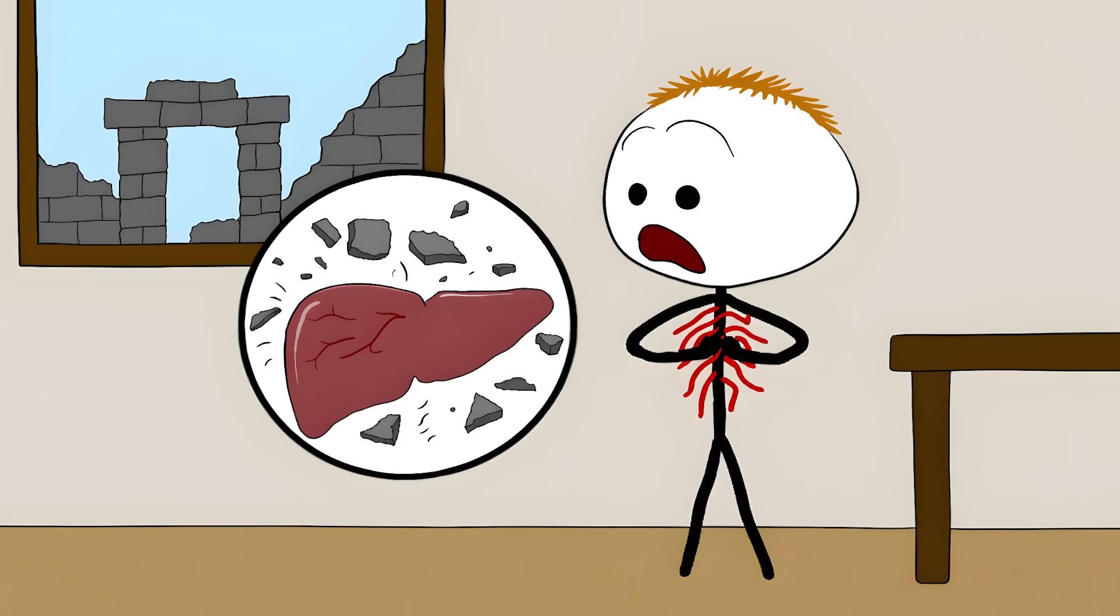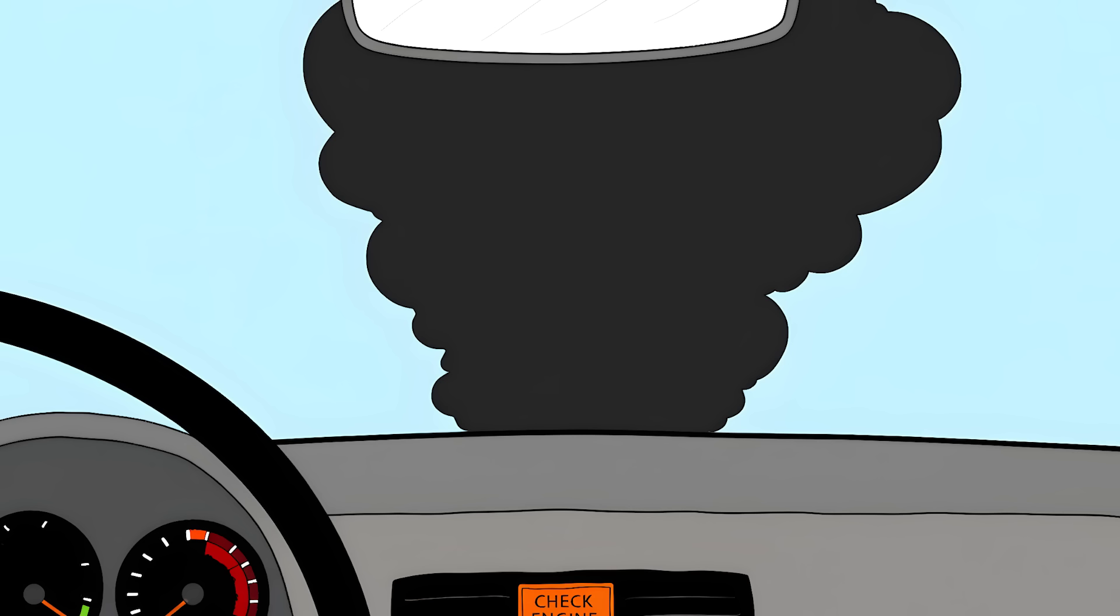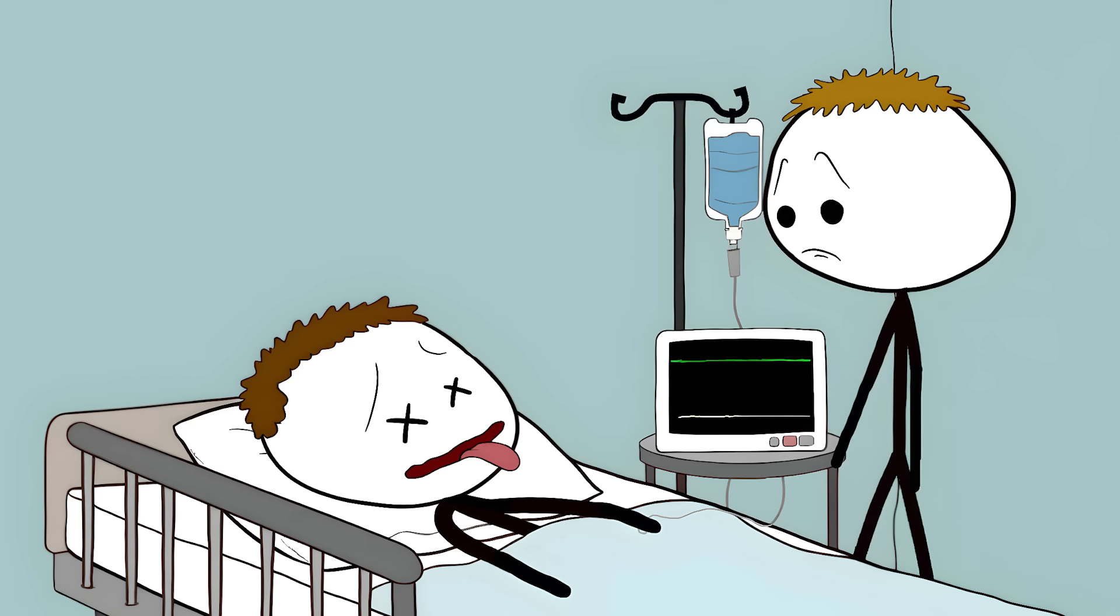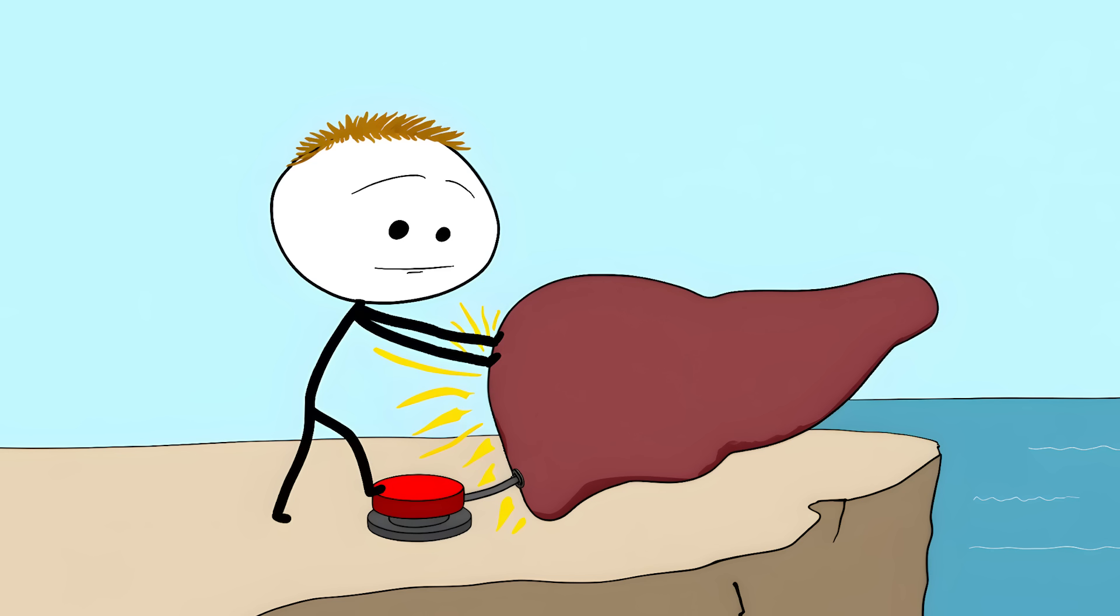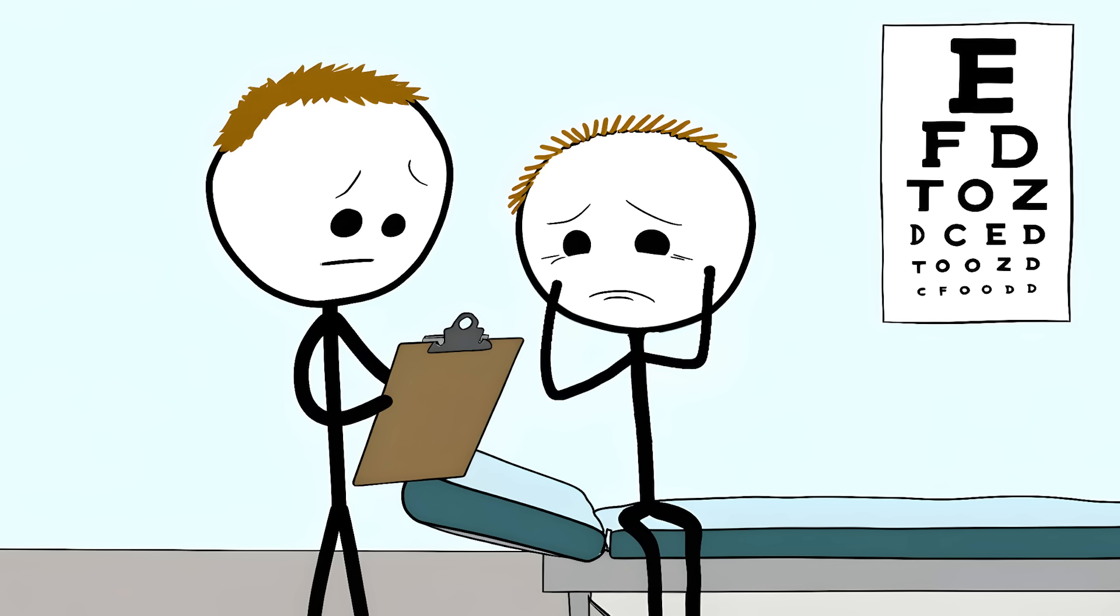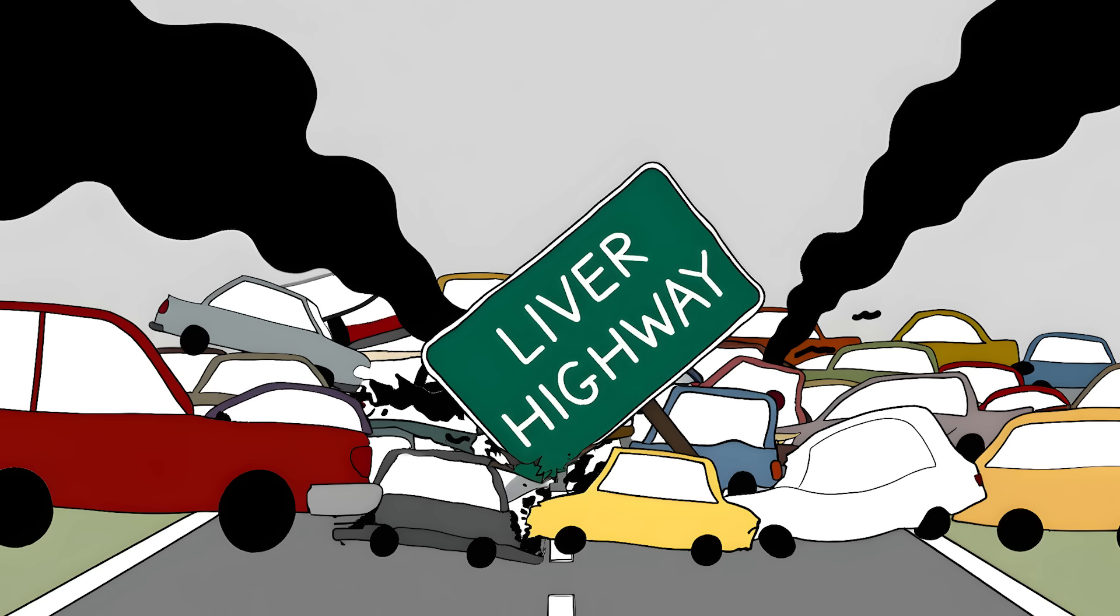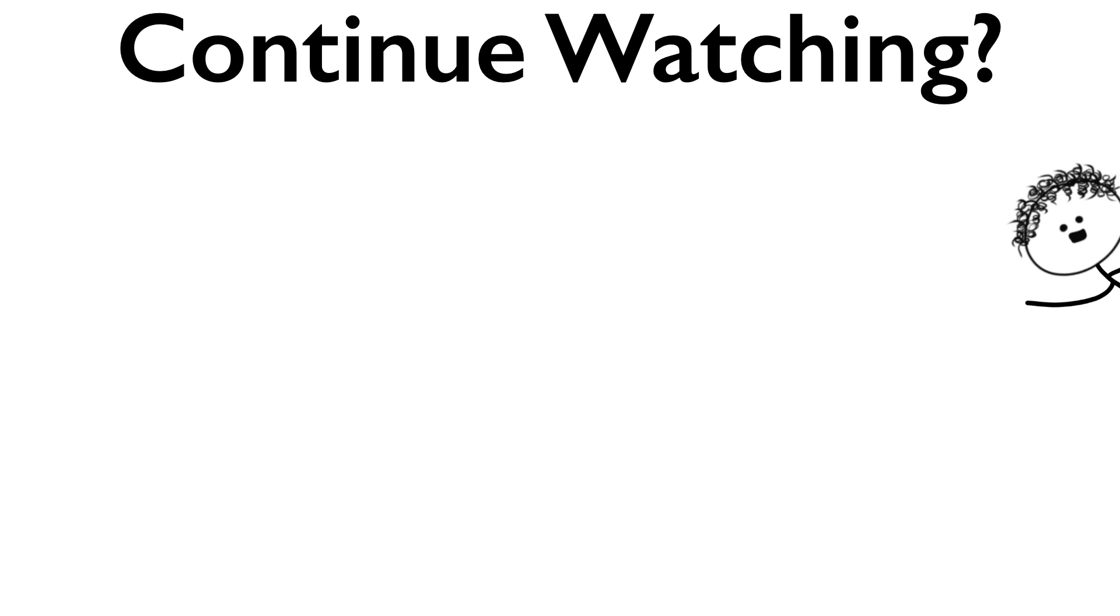By the time these veins show up, your liver might already be in pretty bad shape. It's like when your check engine light comes on. The problem didn't just start, it's been building up for a while. If you ignore these warning signs, things can go south really fast. We're talking potential liver failure, internal bleeding, and other complications. If you catch this early enough, you might be able to hit the brakes on the damage. Your doctor can run tests to figure out what's causing the problem and start treatment before things get worse. If you start seeing these snake-like veins crawling across your torso, don't shrug it off as a cosmetic issue. Get yourself to a doctor before your body's traffic jam turns into a full-blown pileup. That's all for today.